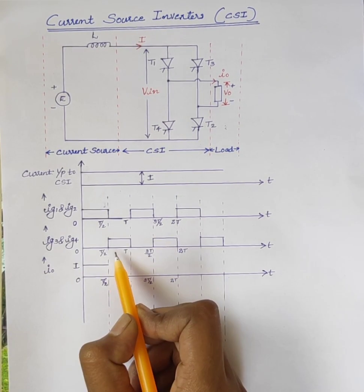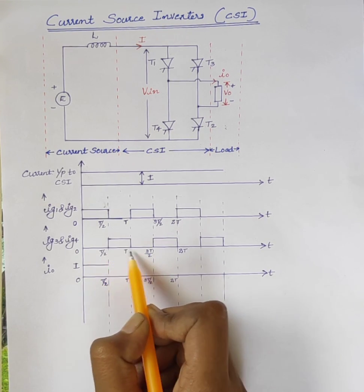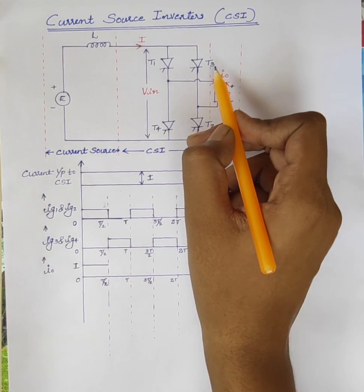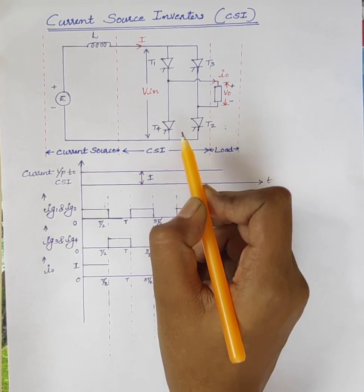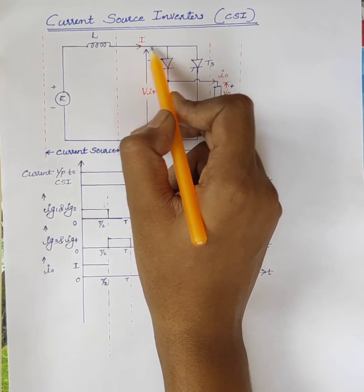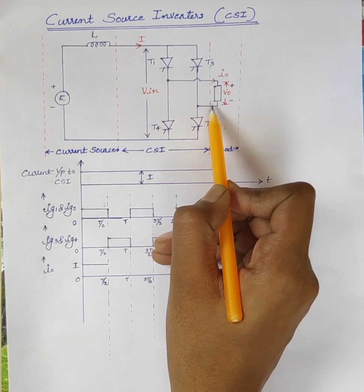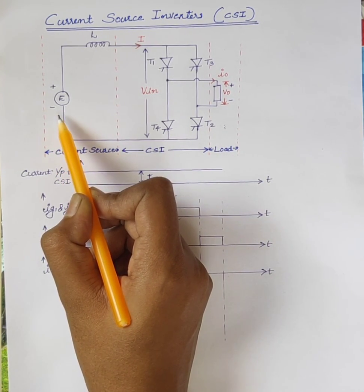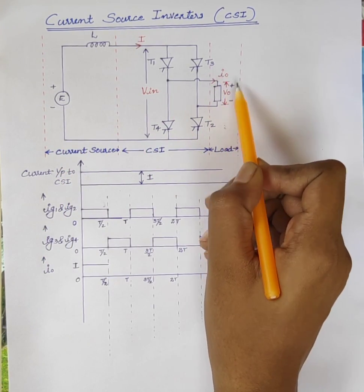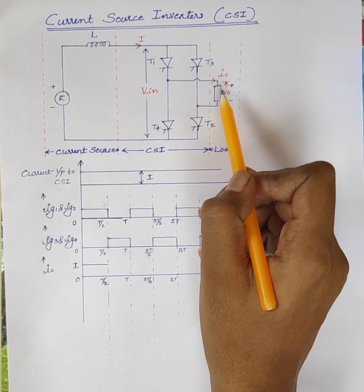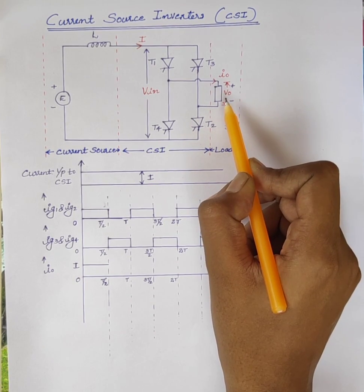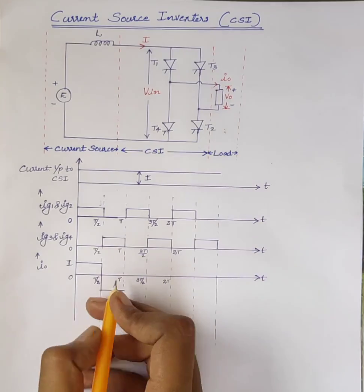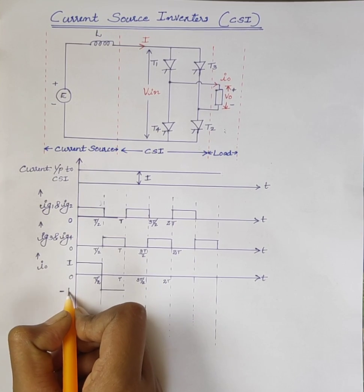Consider the time period T/2 to T. During this interval, firing pulses are given to T3 and T4, and current flows through the path T3, load, T4, back to the source. So the current direction is negative. Therefore the output current is negative and equal to minus I. The amplitude is minus I.